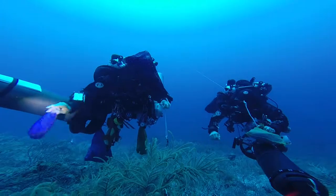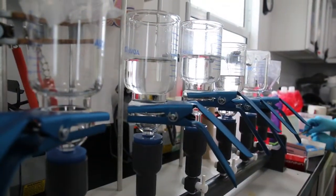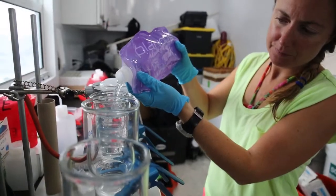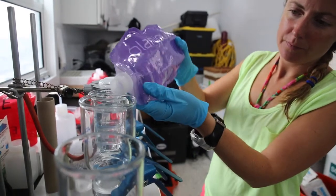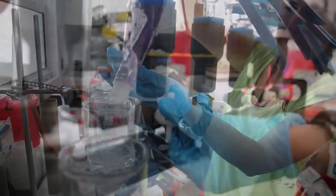It's really simple, we just collect water and then we're able to filter it when we get back and all the DNA gets collected on a filter paper. We can take that back to the lab and do genetic sequencing to actually see exactly what's there in the water column.